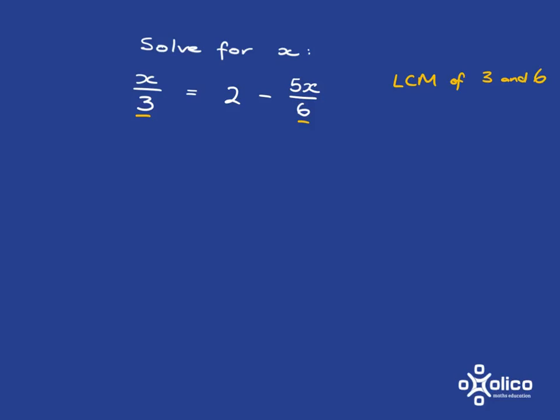So, the lowest common multiple of 3 and 6. Hopefully, you can very quickly and easily see your multiples of 3 are 3, 6, 9, 12. Your multiples of 6 are 6. Well, you've already got your lowest common multiple of 6.